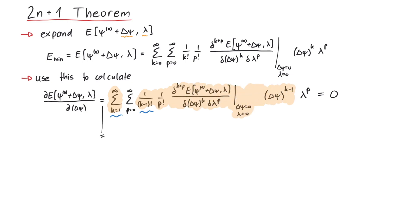Now, the sum over p from zero to infinity over fp times lambda to the power of p has to be zero. Since this has to be true for any lambda, fp has to be zero for all p. This is the first piece of information we need for the proof.